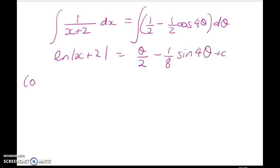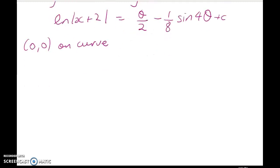Now we know that 0, 0 is on the curve, so we're going to substitute that in. So the log of 2 is equal to 0 minus 1 half sin of 4 times 0 plus c. So c is equal to the log of 2.